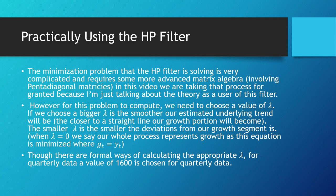The smaller lambda is, the smaller the deviations from our growth segment. When lambda equals zero, we could say our process represents growth completely, so g_t equals y_t. That's obviously a little silly because it's not much of a filter at all.